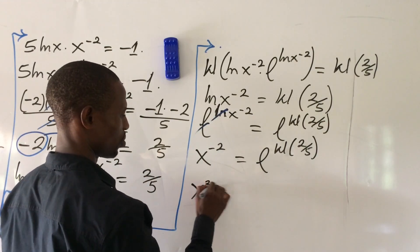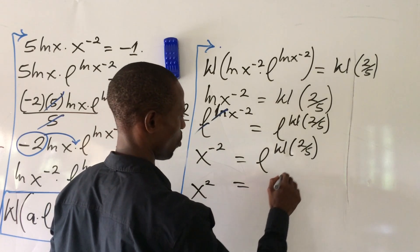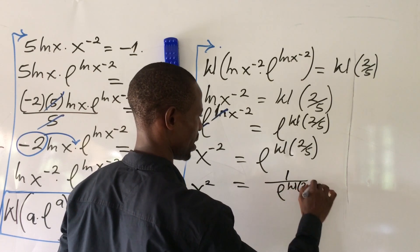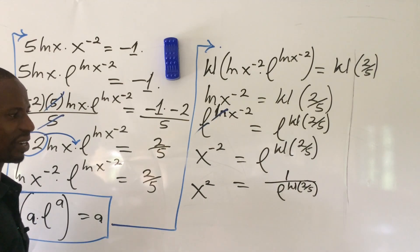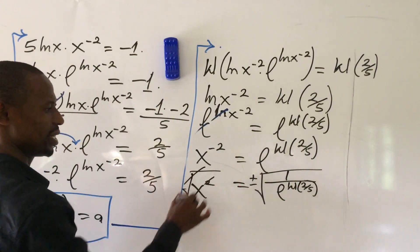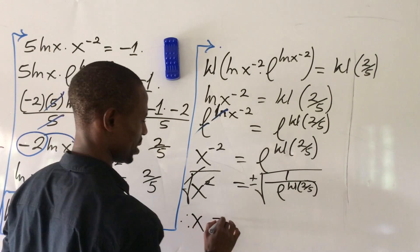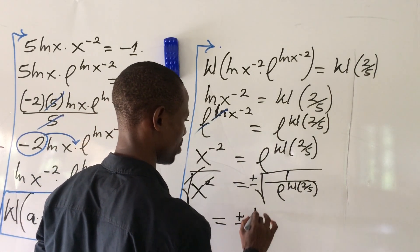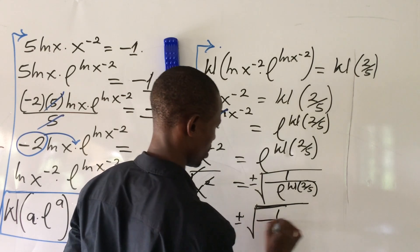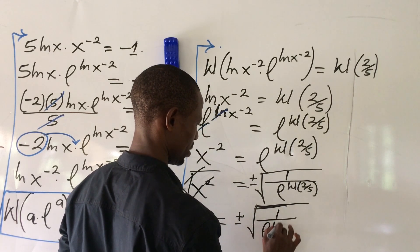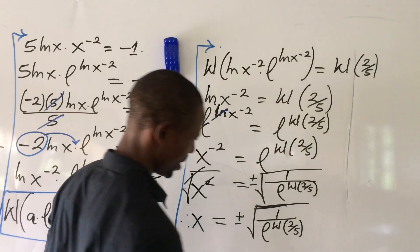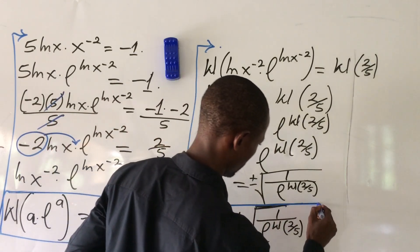Taking the reciprocal of both sides gives us x squared equal to 1 all over e to the power of W(2/(5e)). We're looking for x, so we take the square root of both sides, giving plus or minus. Therefore x equals plus or minus the square root of 1 over e to the power of W(2/(5e)).